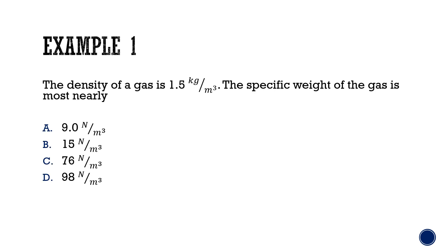For our first example, the density of a gas is 1.5 kilograms per meters cubed. The specific weight of the gas is most nearly what? Pause the video here if you would like to solve the problem on your own. We are asked to find the specific weight, so let's write out that formula where specific weight, the Greek symbol gamma, is equal to density times gravity.